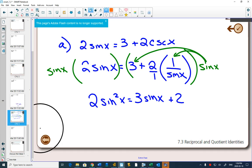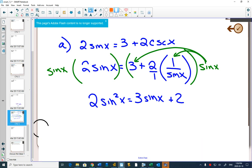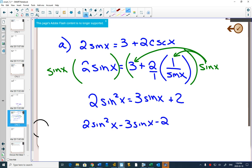How do we solve a quadratic equation? We make one side equal to zero. And so I'll subtract three sine x and subtract two on both sides. Make sure I don't forget the equal zero. Does this factor nicely? If it did, it would have to be two sine x and sine x. And two is either one and two or two and one.